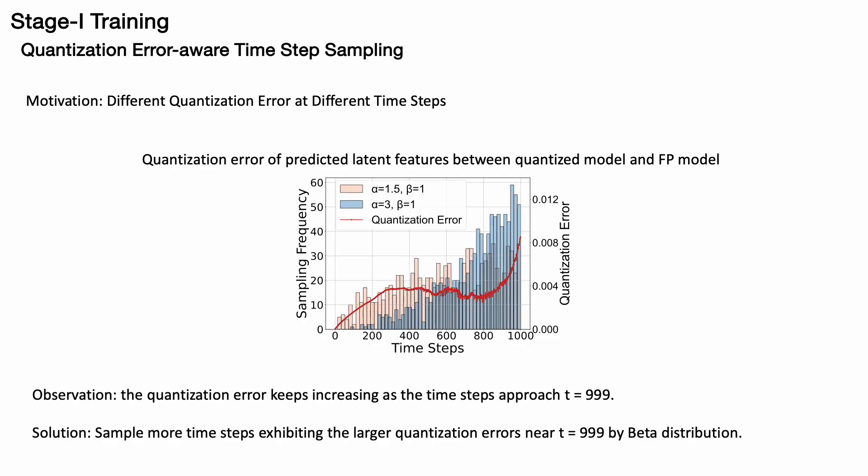After training, we observe a variation in quantization error across different time steps. As illustrated by the red line in the figure, the quantization error increases as time steps approach T equals 999. To address this, we propose quantization error-aware time step sampling.